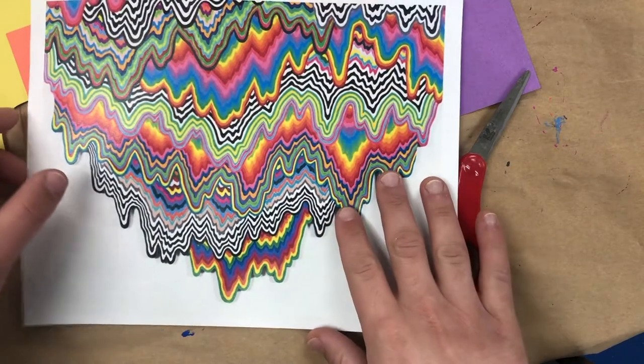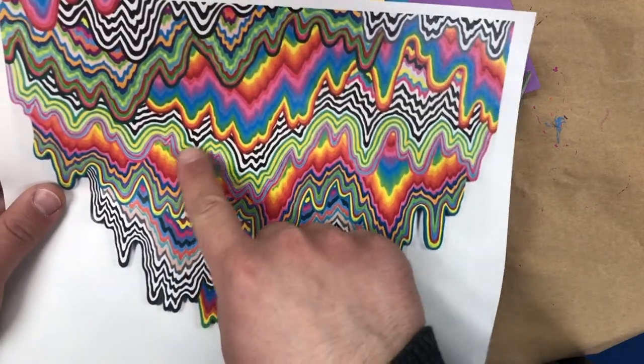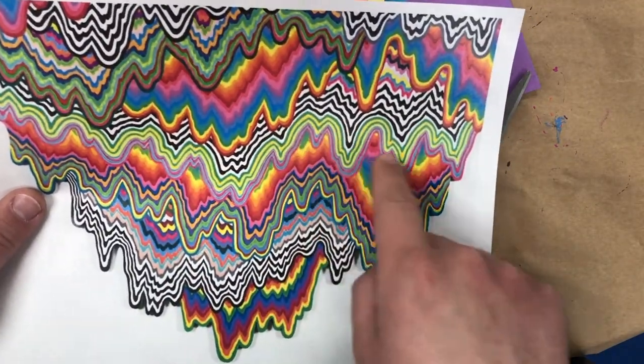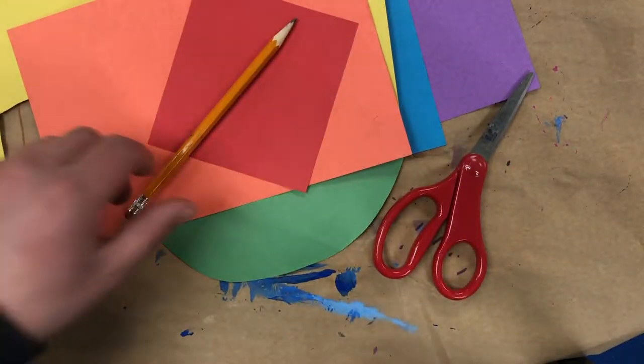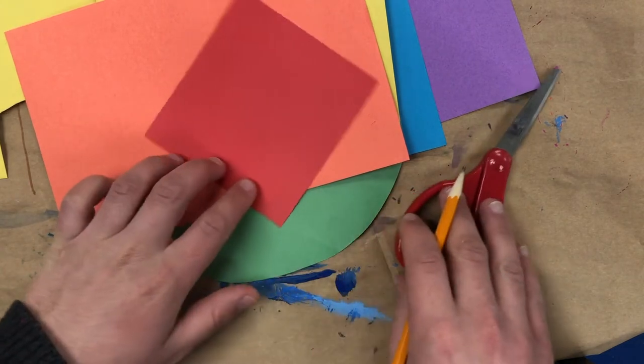So here I have an image of Jen Stark's work. You can see there's lots of really bright colors and intricate patterns. For this project, I'm going to use construction paper, scissors, glue, and I've got a pencil to show you how I get started.